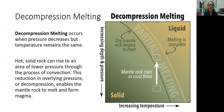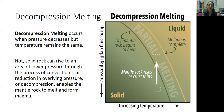Decompression melting occurs when pressure decreases but temperature remains the same. If you pick a spot anywhere on this graph and pressure decreases while temperature remains the same, that rock is just going to move upward on the graph — not left or right, just upward. Because the pressure is released, that solid can actually melt and become a liquid. Pressure keeps things solid; when we release that pressure, the atoms are able to expand, move away from each other, and become a liquid.